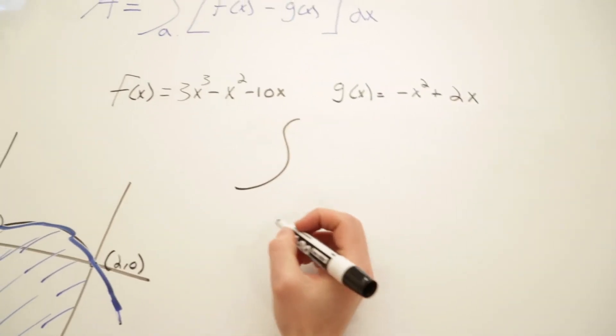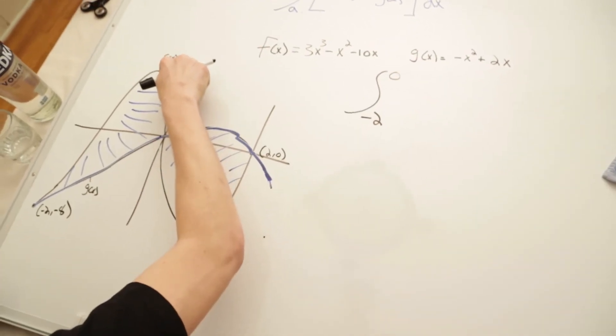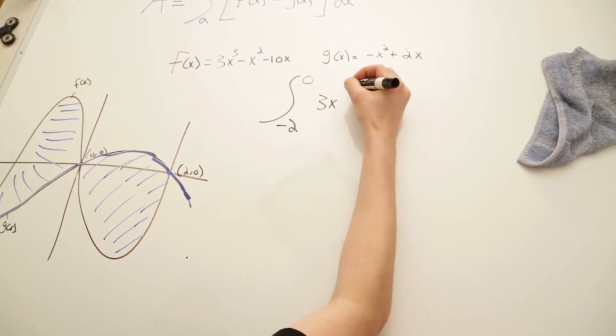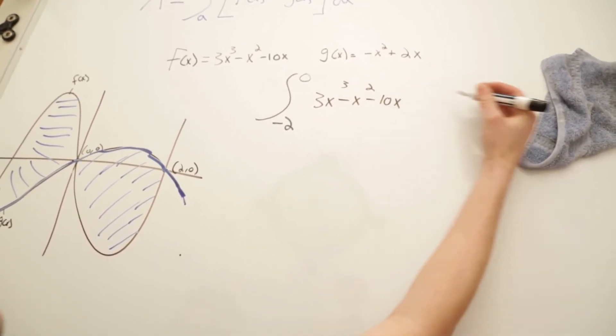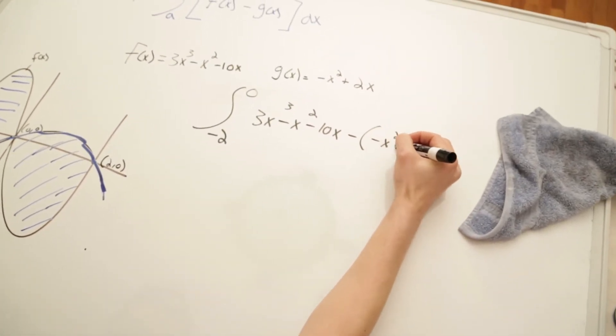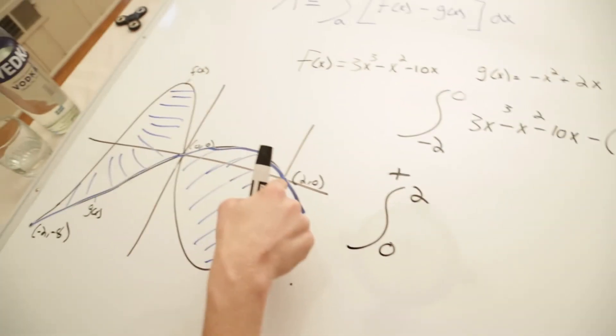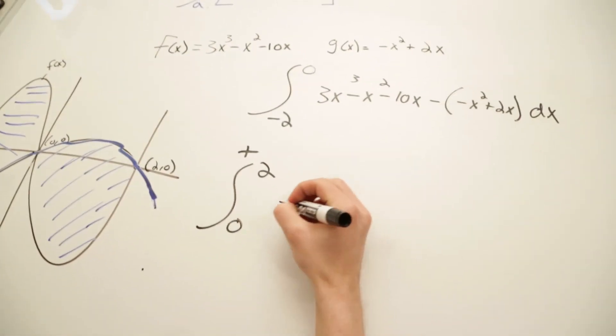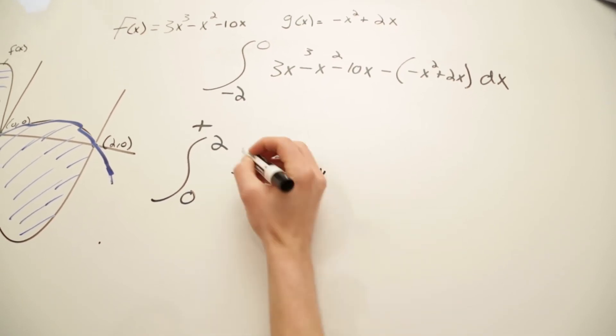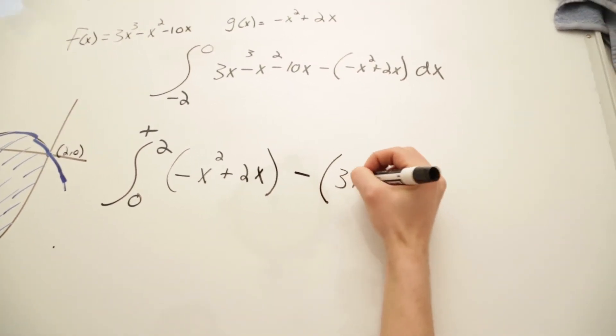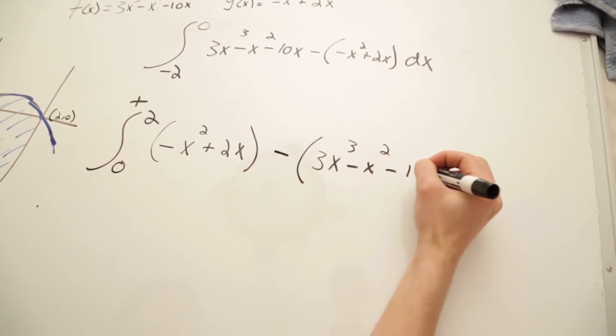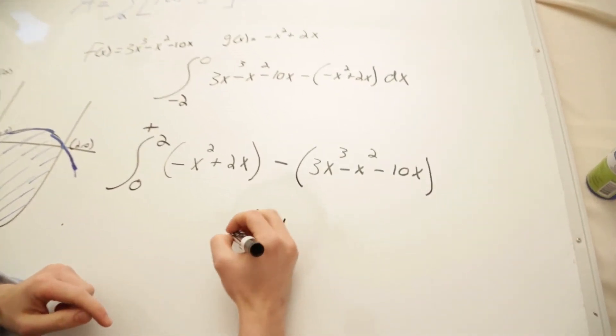We're gonna have the integral from negative 2 to 0. We see that our f(x) is on top, g(x) is on the bottom. So, 3x cubed minus x squared minus 10x minus negative x squared plus 2x. And then we're gonna be adding this. Plus from 0 to 2. Now, on the right side, our g(x) is the top function. So negative x squared plus 2x minus 3x cubed minus x squared minus 10x. So I'm not gonna do all this integration. This is a very long problem. If you want to do it yourself, the final answer is gonna be 24.